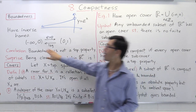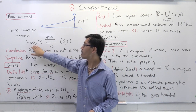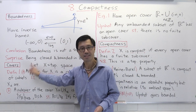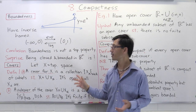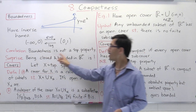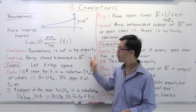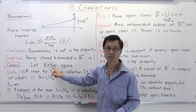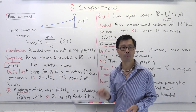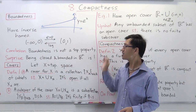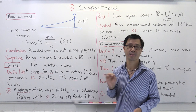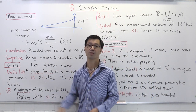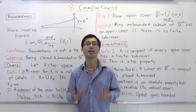Note that in this case, the intervals here are both open. The big surprise is that even though boundedness is not a topological property, being both bounded and closed inside R is a topological property. To see why, I need to introduce the notion of covers, which is very important in topology.